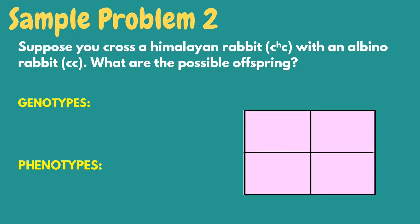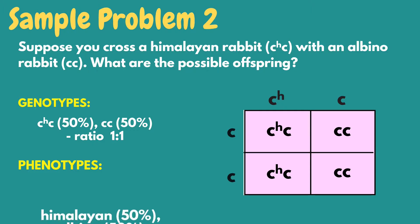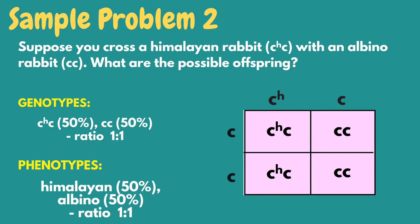In sample problem number 2, the genotype combination for each fur color was also given. Suppose you cross a himalayan rabbit with an albino rabbit — what are the possible offspring? The possible offspring based on the Punnett Square are himalayan, albino, another himalayan, and another albino. There are only two different genotypes, so the genotypic ratio is 2:2, or simplified, 1:1. Expressing these genotypes into their phenotypic form, there are two himalayan and two albino, giving a phenotypic ratio of 2:2, or simplified, 1:1.